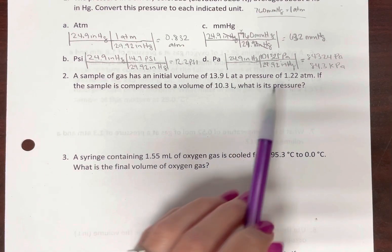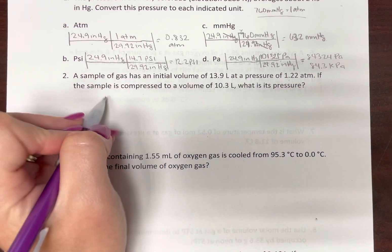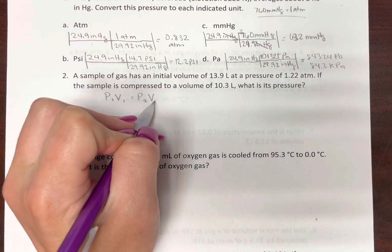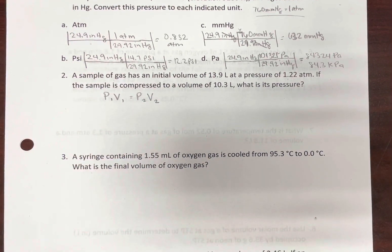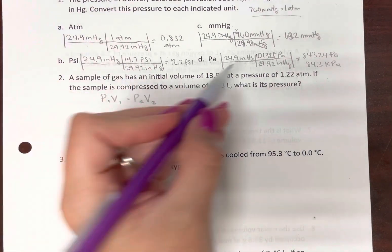Here we have a new volume, we want to know the pressure. Alright, hopefully you can remember this is Boyle's Law, and so we'll use P1V1 equals P2V2. Now if you want to rearrange that algebraically, that's fine. Just make sure you pair these up correctly.